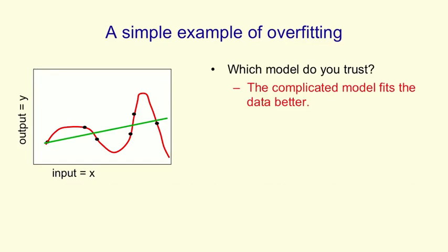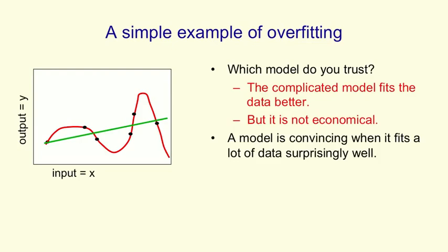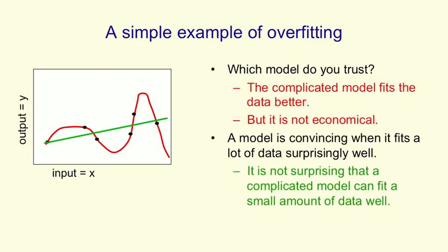The complicated model certainly fits the data much better, but it's not economical. For a model to be convincing, what you want it to do is be a simple model that explains a lot of data surprisingly well. And the polynomial doesn't do that. In fact, it explains these six data points, but it's got six degrees of freedom, so wherever these data points were, it would be able to explain them. We're not surprised that a model this complicated can fit that data very well, and it doesn't convince us that this is a good model.